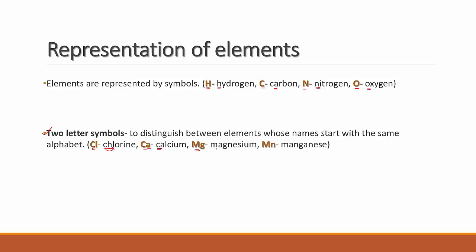Magnesium is Mg and manganese is Mn — these are easy to confuse. A simple way to remember: Mag (M-A-G), drop the A, gives Mg for magnesium. Man (M-A-N), drop the A, gives Mn for manganese. So Mg is magnesium and Mn is manganese.